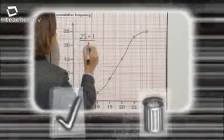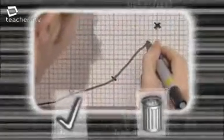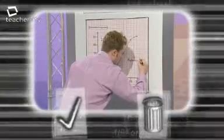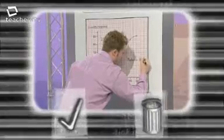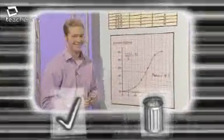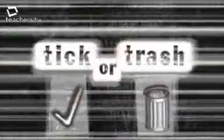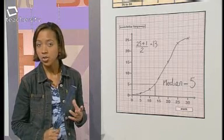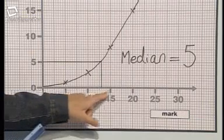So, whose working should you tick and whose should you trash? Was Katie right to read up from the mark and across to the cumulative frequency? Or was Jamie right to read across from the cumulative frequency and down to the mark? OK, it was me who made the mistake. I got the first bit right, the median is the 13th value, but I read that value off the wrong axis. I was asked to find the median mark, so I should have read my answer from this axis.